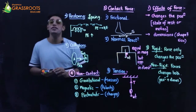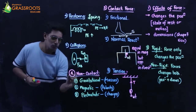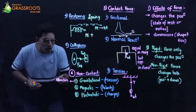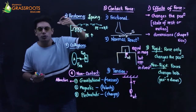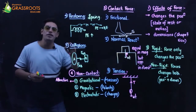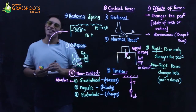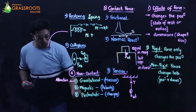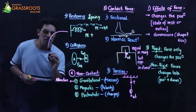Gravitational force is always attractive in nature - it will never repel. If you throw an object up it will come down, if you leave an object it will fall due to free fall, if you throw it horizontally it will follow projectile motion and come down. Every time the object is attracted towards the Earth, so gravitational force is always attractive, not repulsive.